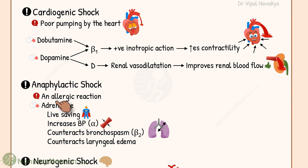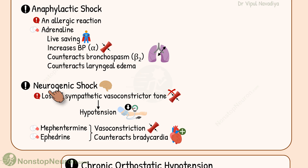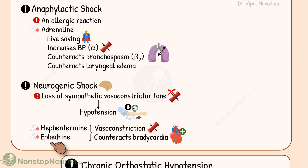Now let's talk about anaphylactic shock. This is an allergic reaction. Adrenaline is life-saving in this condition. It increases blood pressure, counteracts bronchospasm, and counteracts laryngeal edema. In neurogenic shock, there is a loss of sympathetic vasoconstrictor tone. Resultant vasodilatation causes hypotension and decreased tissue perfusion. Methantermine and ephedrine can be used in this situation — they cause vasoconstriction and also counteract bradycardia.